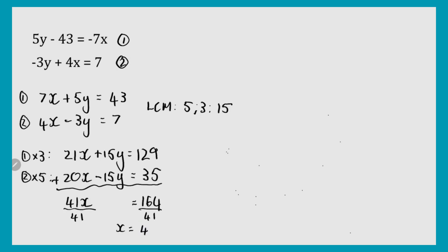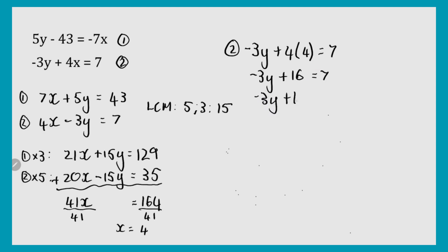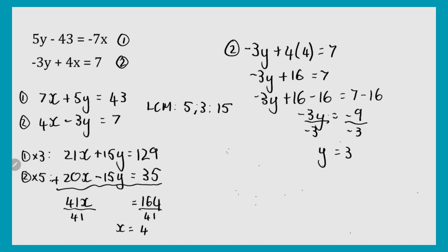Now, you have your x value. You can substitute it into any one of these equations. I'm going to use equation 2: negative 3y plus 4 times 4 equals 7, so negative 3y plus 16 equals 7. Subtract 16 from both sides to get negative 3y on its own: negative 3y equals 7 minus 16, which is negative 9. Dividing both sides by negative 3, y equals 3. You can go back and substitute both y and x values into any equation to see if it balances out.